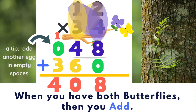When you have both butterflies, then you add. Let's go ahead, but before we do, add another egg in empty spaces. Let's go. Eight plus zero is eight. Four plus six is ten. Carry the one. One plus zero plus three is four. The answer is four hundred and eight.